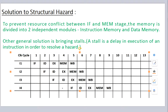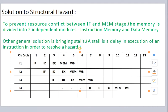Again we have a resource conflict with the memory access stage of the third instruction, so here also we put a stall and start our instruction fetch in the sixth clock cycle. Again we have a resource conflict with the memory access stage, so we put a stall and start instruction fetch in the seventh clock cycle. Now we have two stall cycles, three stall cycles, and the total number of clock cycles to execute these instructions is 11.